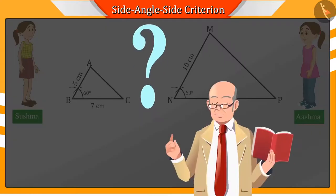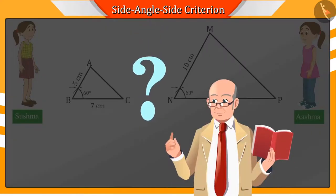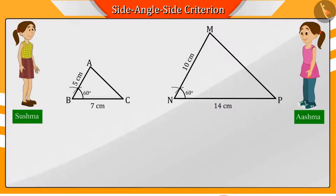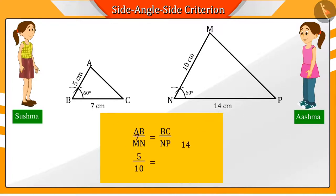After the triangles are made, the teacher asks them what do they see in these two triangles. Shushma says that the sides of the triangles are proportional.